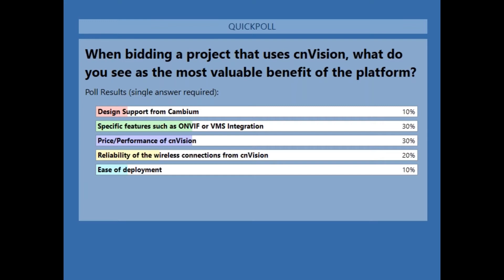Looking at the poll results, there's a pretty good cross section between specific features, price performance, and reliability. One that is low but I'd love to see go higher is 'design support from Cambium,' because I really think that will help you get your legs underneath you on some projects. I just want to make sure the offer is out there to reach out to us for that support.